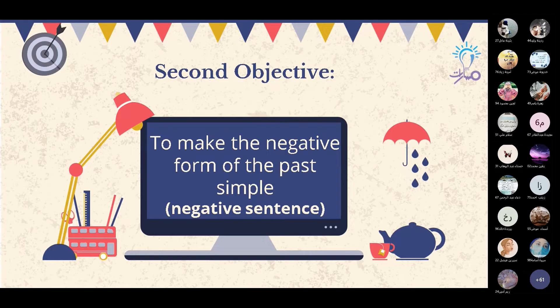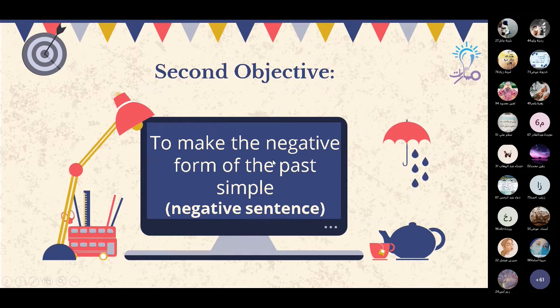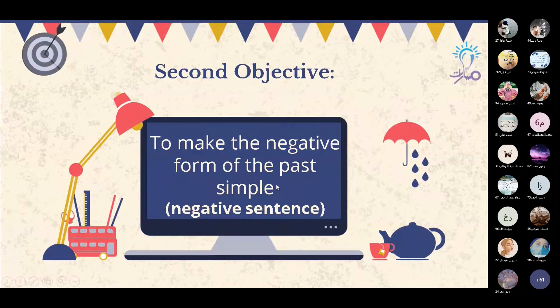الهدف الثاني هو صياغة الشكل المنفي للماضي البسيط، to make the negative form of the past simple. صياغة الشكل المنفي من الماضي البسيط أو الجملة المنفية.